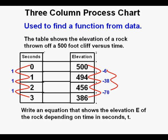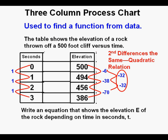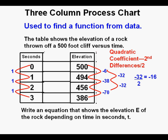So we go to our next test: second differences. We draw arrows again from the first differences and calculate the second differences. Negative 38 minus negative 6 equals negative 32, and negative 70 minus negative 38 also equals negative 32. The second differences being equal is the sign of a quadratic function or relation. The quadratic coefficient is the second difference divided by 2 — in this case, negative 32 divided by 2, which equals negative 16.